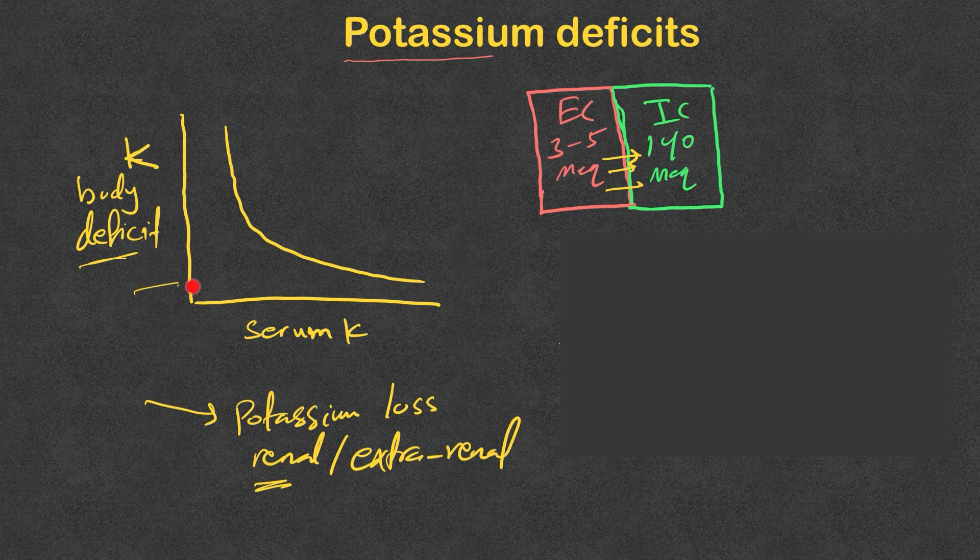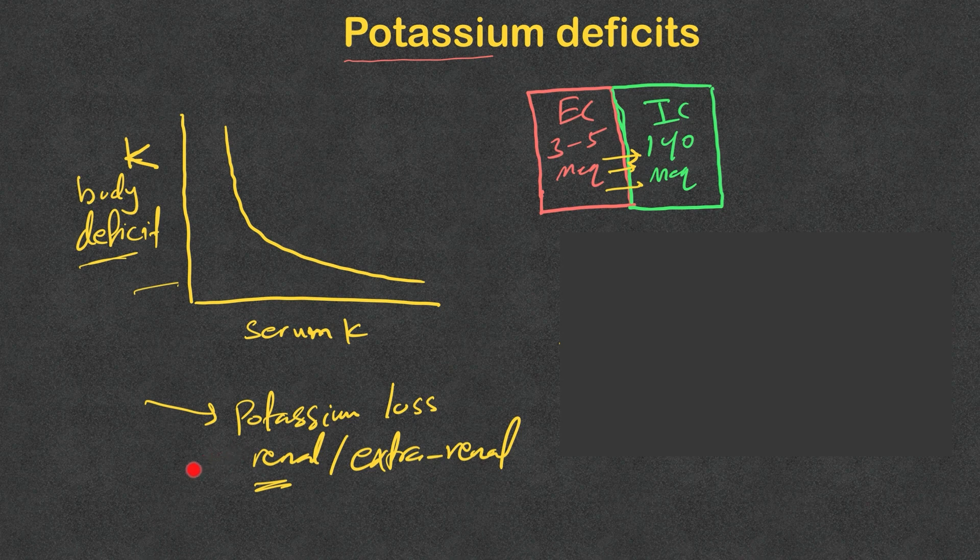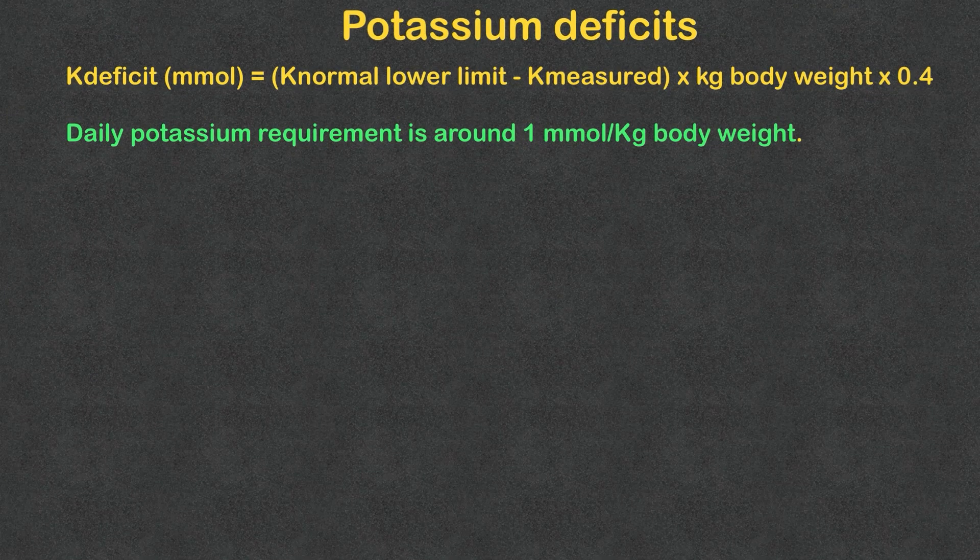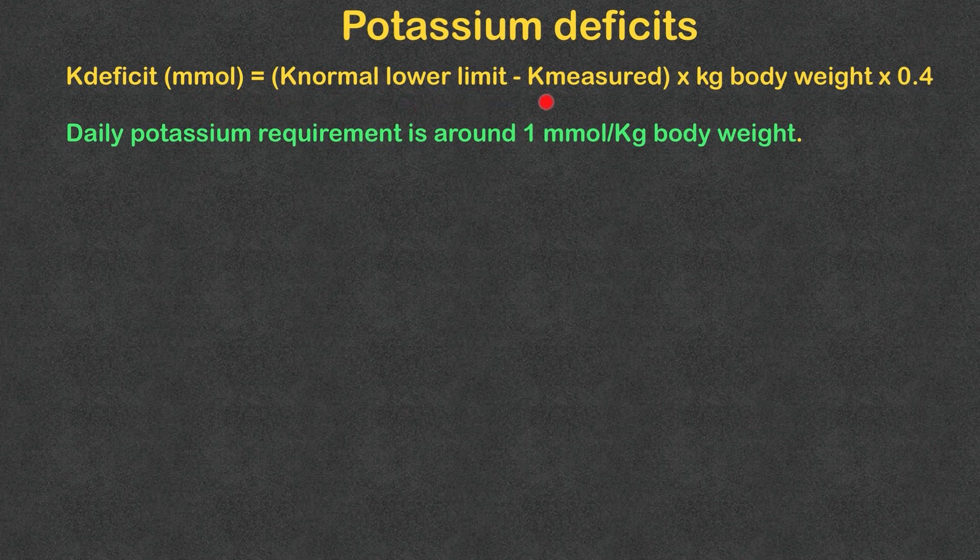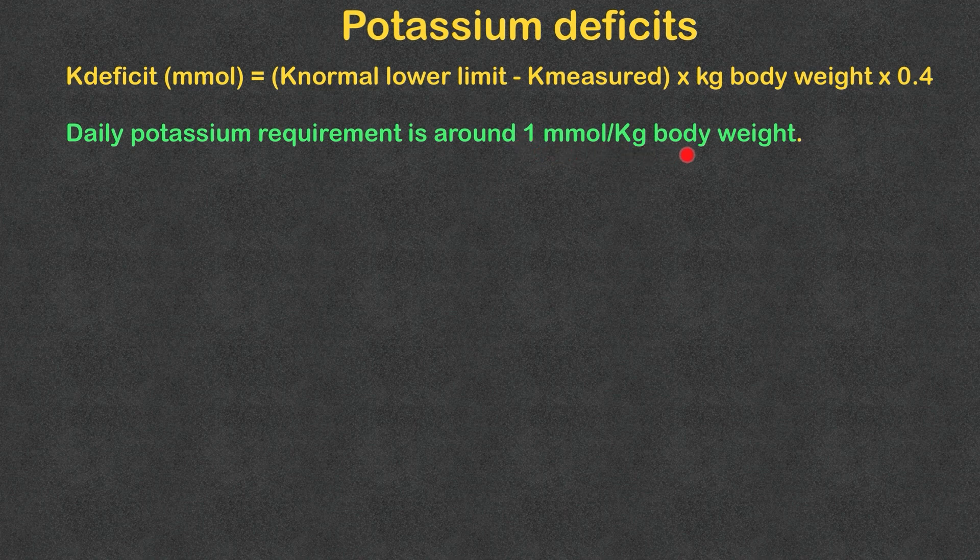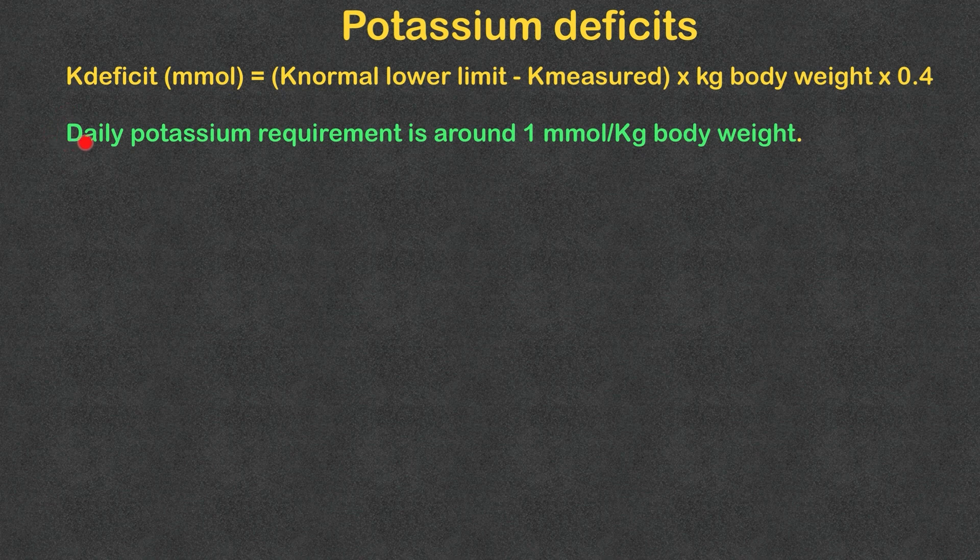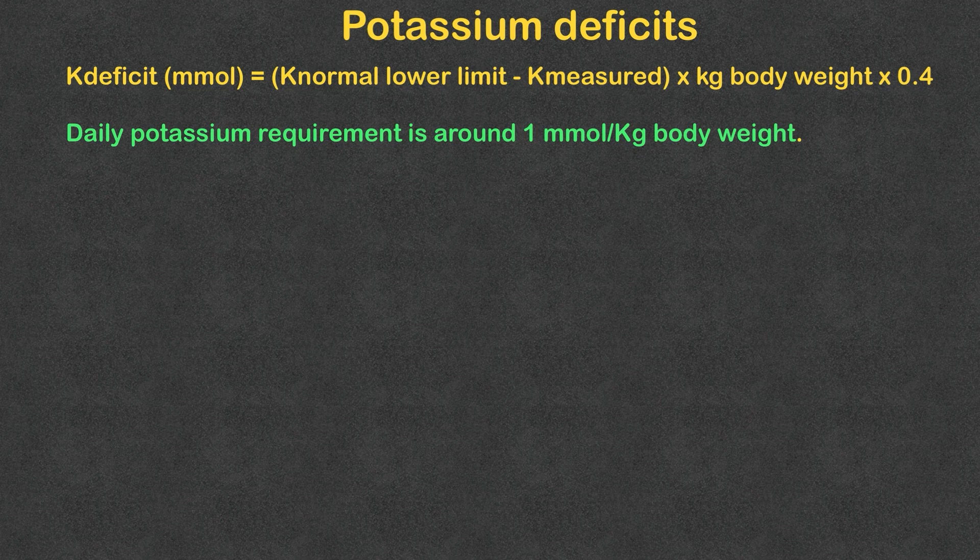Use this estimation of body potassium deficits if the hypokalemia is solely due to potassium loss, whether renal or extra-renal. Here's an equation that will give you an estimate. This is the daily potassium requirement, which is around 1 millimole, meaning milliequivalent per kilogram of body weight. So it's very important when you calculate the deficits that you add the daily potassium requirement to that deficit.